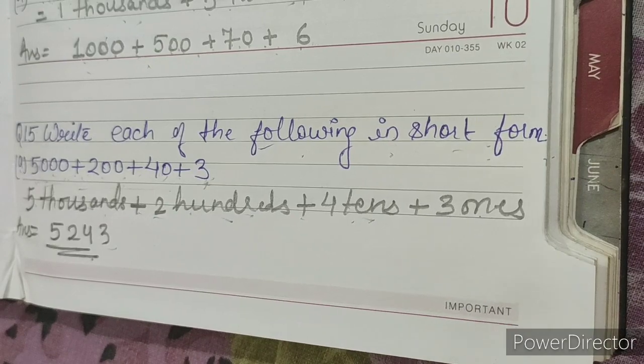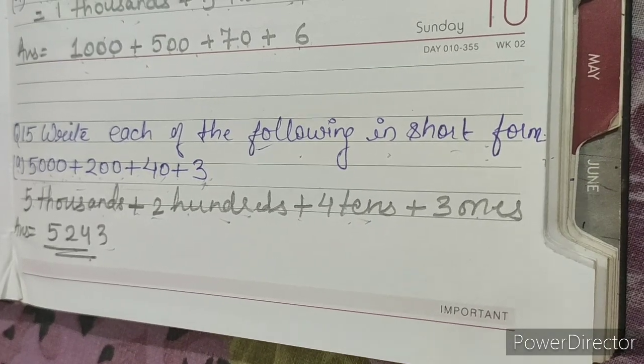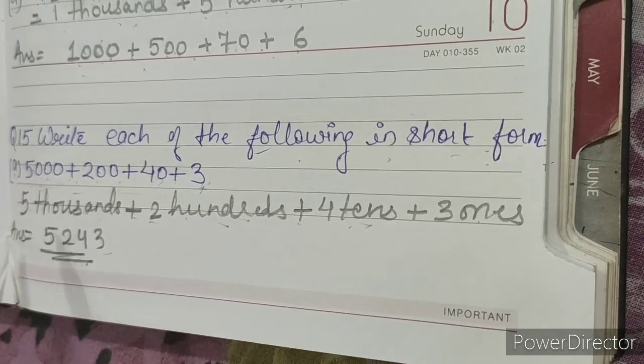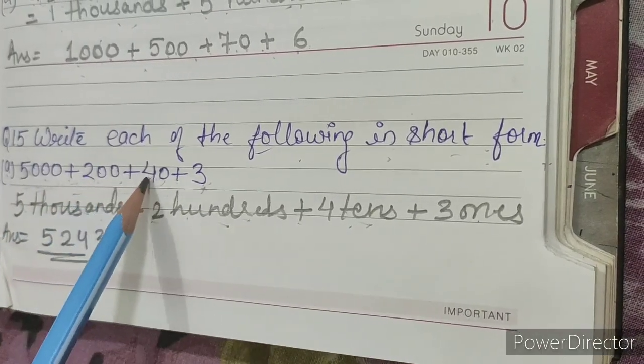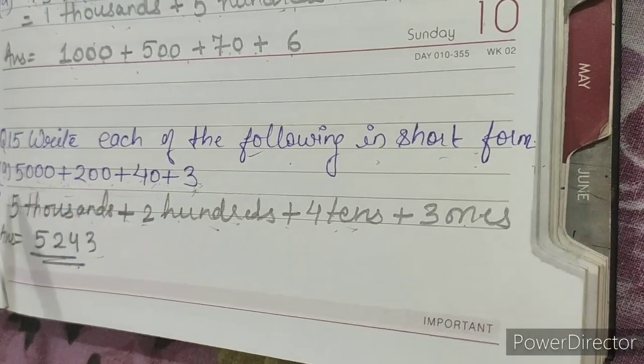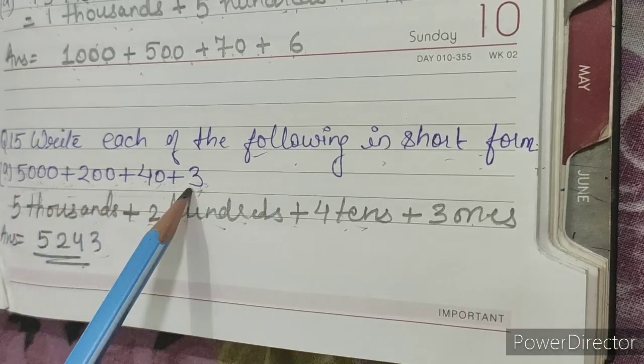Question 15: Write each of the following in short form. Part A: 5000 + 200 + 40 + 3. We have to write the short form of these numbers.